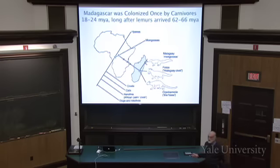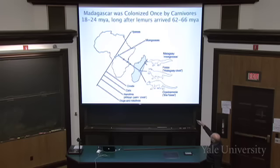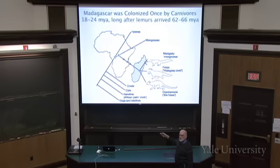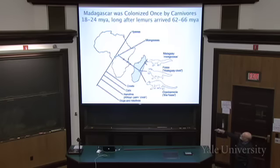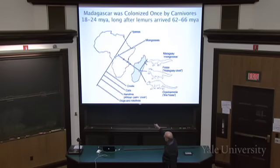Ann Yoder, who was on the faculty here and now heads the Duke Primate Center, has specialized in the mammals of Madagascar. On Madagascar you find a local radiation of things that look kind of like civet cats or mongooses. The question was: did they come over from Africa separately, or did they all speciate on Madagascar? Ann was able to reconstruct the phylogeny well enough to show that these animals are actually all relatives of mongooses — and mongooses are close relatives of hyenas, with civets as a sister group and cats as a further sister group.